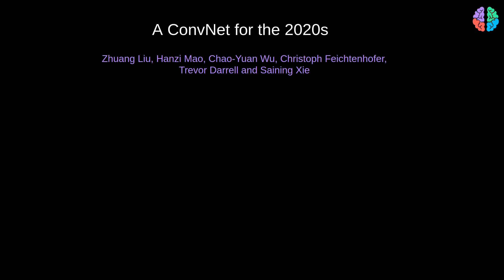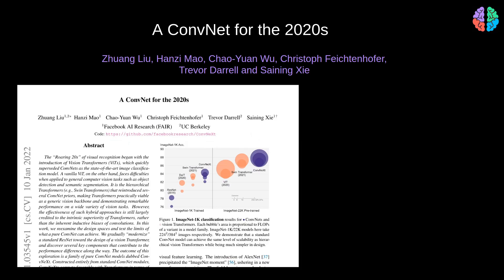What happens if we try and squeeze the performance of convolutional neural networks with all the tricks used in transformers, and with all the advancements in regularization, augmentation and optimization? The answer is ConvNeXt, which promises to be the next-generation convolutional neural network architecture. This paper puts convolutions back on track and says that convolutions are here to stay and cannot be just defeated by transformers.